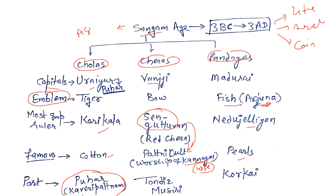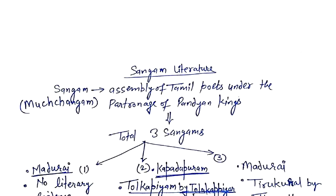The most important port of the Cholas was Puhar, also known as Kaveri Patnam. Another important port was Arikamedu, which is today's Pondicherry — during the Sangam Age it was known as Arikamedu. The Chera ports were Tondi and Musiri, and the Pandya port was Korkai.